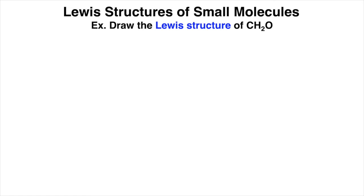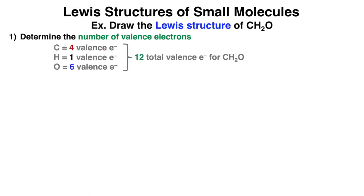Draw the Lewis structure of CH2O. Step one is to determine the number of valence electrons. Carbon has four valence electrons, hydrogen has one valence electron, and oxygen has six valence electrons. So if we add up the total number of valence electrons for the molecule CH2O, we get 12. And remember, this molecule has two hydrogens.